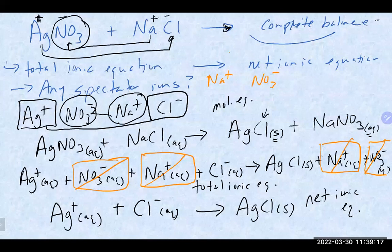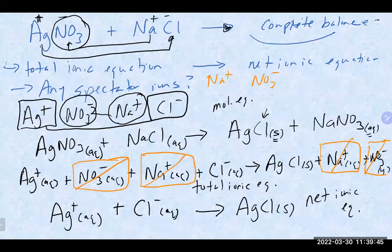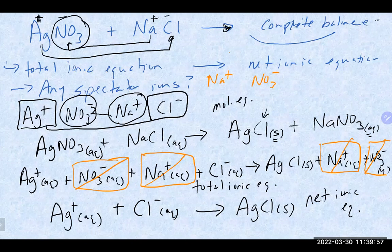A common mistake people make when writing total ionic or net ionic equations is forgetting to write the charges on the ions. They're called ionic equations — so you must include the charges. The silver ion has a charge, nitrate has a charge, sodium has a charge — they must be included. The solid, however, does not have a charge since the positive and negative ions came together to form a neutral compound. You should also include state symbols (aqueous or solid). Any questions on those steps?